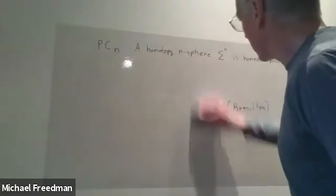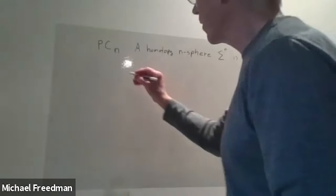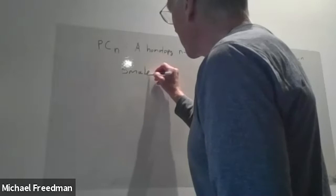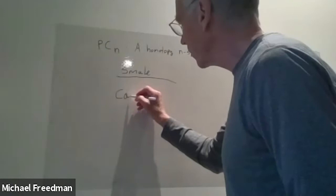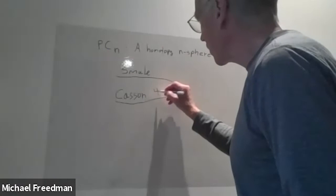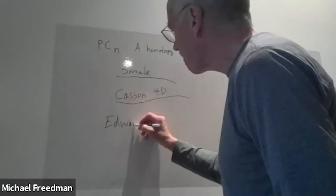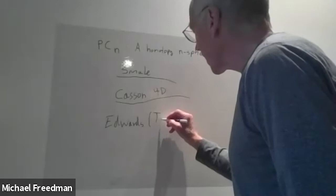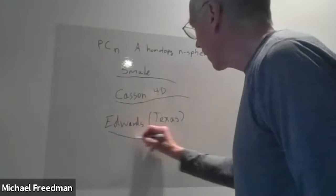To show what happens in four dimensions, I need to take you back to show how Smale's proof works. But before I get into the details, let me say philosophically that there are three streams of thought in the proof. I'll personify them: one is Smale, representing differential topology and dynamical systems; the second is Andrew Casson, representing very special four-dimensional constructions; and the third is Bob Edwards, representing what you might call the Texas school of topology. These three streams flow together and give the proof.